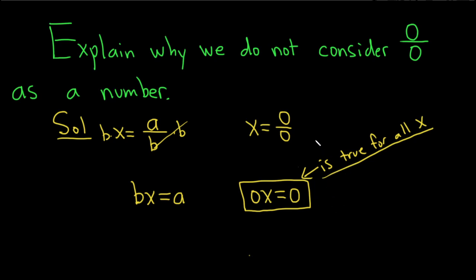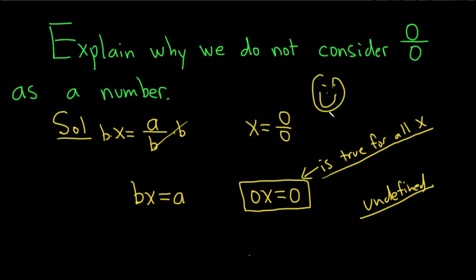So we say that 0 over 0 is undefined, simply because we cannot define it. I hope this video has been helpful to you in some way. Good luck.